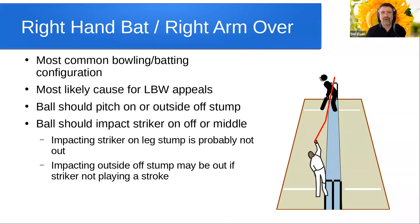The ball should pitch on or outside of off stump. The ball should impact the striker in line with off stump or middle stump. It needs to impact the striker on the off stump or middle stump line. If it impacts on the line of leg stump, it is probably not out. If it impacts outside of off stump, it may be out if the striker is not playing a stroke.